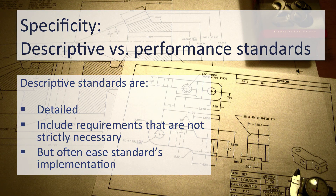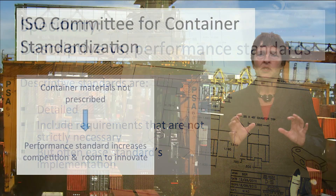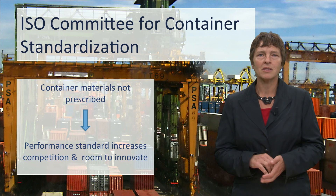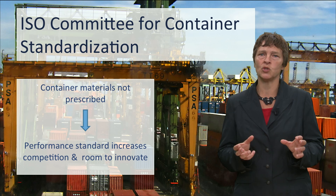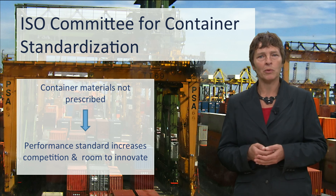Regarding specificity, some standards are very detailed. Especially for people new to a field, this often makes it easier to implement them, but they sometimes include requirements that are not strictly necessary. These detailed standards are called descriptive standards, and sometimes product specifications. For example, in the ISO Committee for Container Standardization, some people proposed to also specify the material containers should be made of — for example, aluminium.